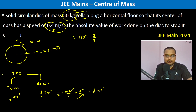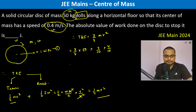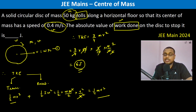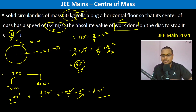So therefore total kinetic energy is 3 by 4 into mv squared, which equals 3 by 4 into 50 into (4/10)². This gives 6 Joules. When the disk is stopped, the entire kinetic energy is gone, so the work done equals the change in kinetic energy — which is 6 Joules.